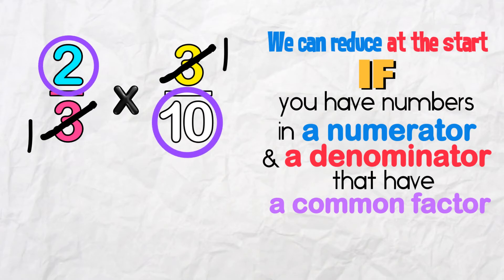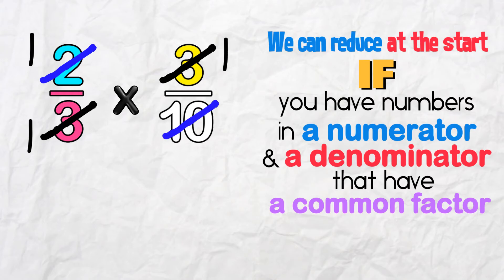And look at this! 2 and 10 are both even numbers. We can reduce these as well. Divide by 2! Here we get 1, and in 10 there's 5 twos. Nice!